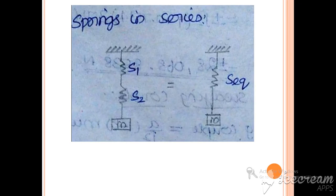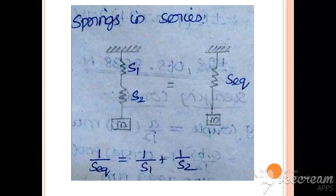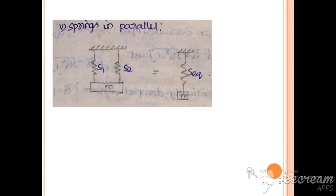When two or more springs are connected in series, the equivalent spring stiffness can be calculated using the formula: 1/S_equivalent = 1/S1 + 1/S2.